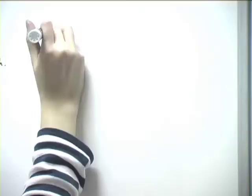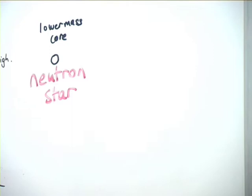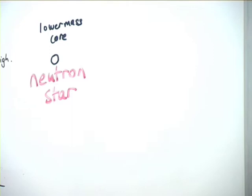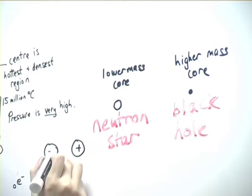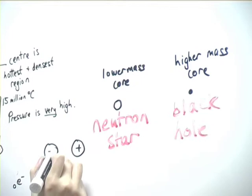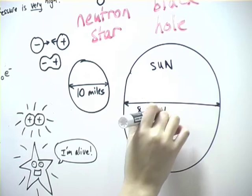A neutron star is made up entirely of neutrons which are created due to the extremely high pressure of the remaining core. Electrons are forced to combine with protons forming the neutrons. A neutron star is normally about 10 miles in diameter, but has 1.4 times the mass of the Sun. It's the densest known thing in the universe. One teaspoon of a neutron star on Earth would weigh a billion tons.